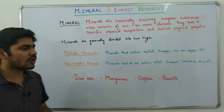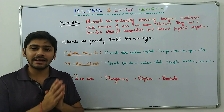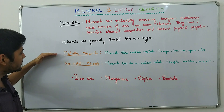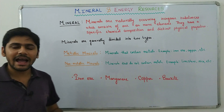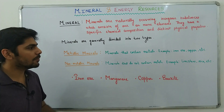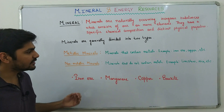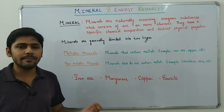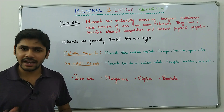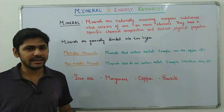Minerals are generally divided into two types based on whether metal is present or not: metallic minerals and non-metallic minerals. Metallic minerals contain metals — for example, iron ore, copper, and bauxite. Non-metallic minerals do not contain any metal — for example, limestone and mica.